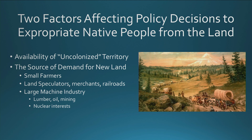As the United States moves west, it's important to recognize how much uncolonized territory exists, and that will allow peoples to expand their position on the market. Then there's the source of demand for the new land. The source of demand across these three major periods includes the small farmers pursuing the Jeffersonian dream, the land speculators, merchants, and railroads that expand as the United States moves westward.